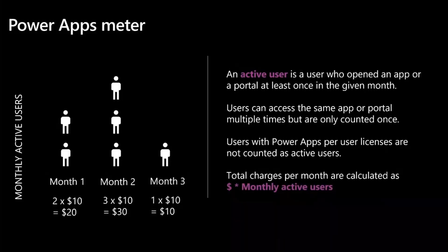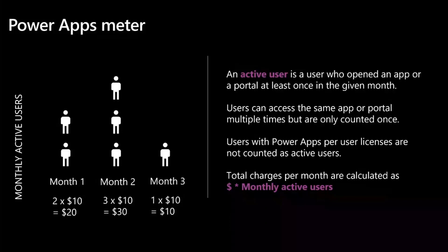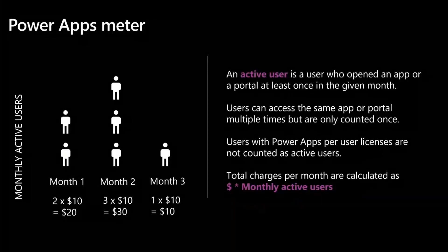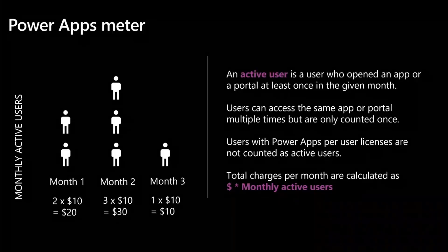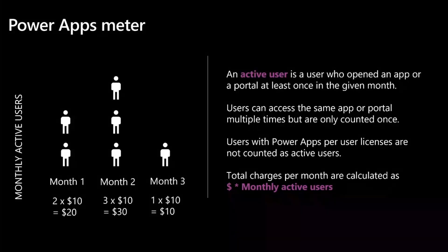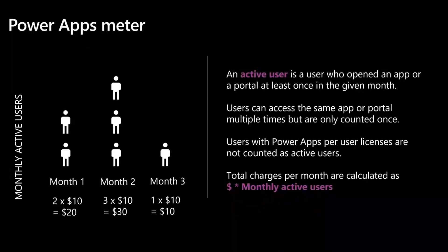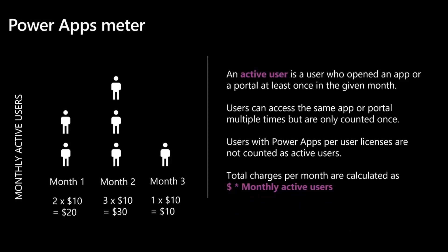There are two different kinds of meters for paying for Power Apps and Dataverse via Azure subscription. For the Power Apps meter, you are charged for any active user who uses an app. An active user is anyone who opens an app at least once in a month. If I use the app 10 times in a month, I'm only counted as one active user and charged only once. If I use two different apps in a month, I'm counted as two active users and charged for both apps. If you already have a per-user license, you are excluded and not charged again.